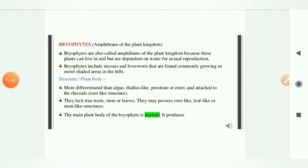Bryophytes, we all know, are known as amphibian of the plant kingdom because they live in soil but are dependent on water for sexual reproduction. Bryophytes include mosses as well as liverworts, and they mostly grow in moist shaded areas in the hills.